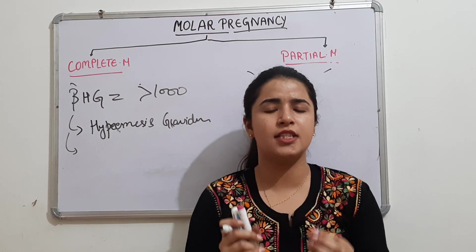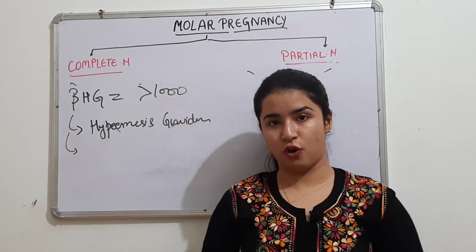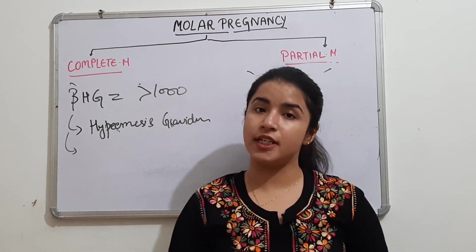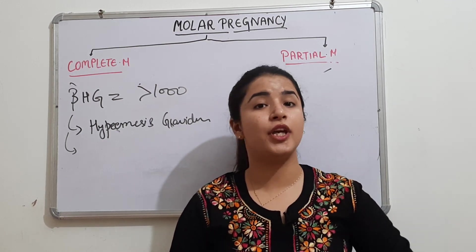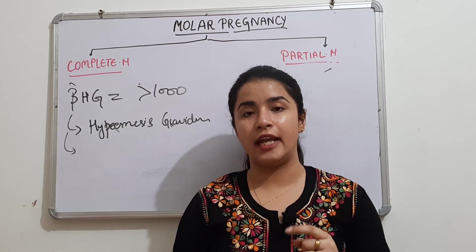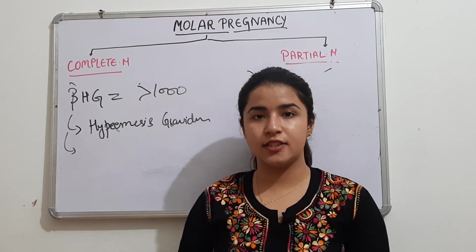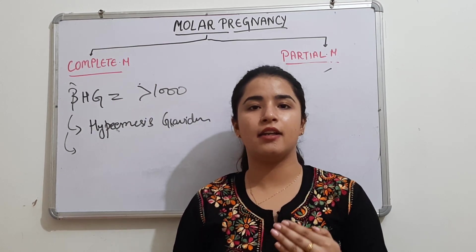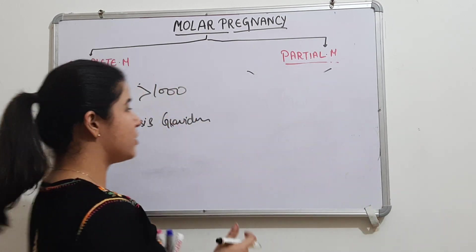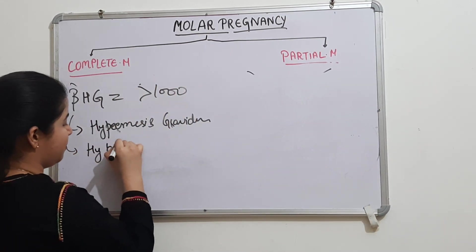Another clinical feature: beta HCG has a very similar structure to TSH. Because of this structural similarity, it will go to the thyroid gland, stimulate the TSH receptors, increase T3 and T4 production, and you will see hyperthyroidism as a result.